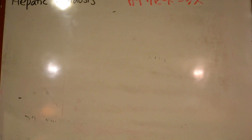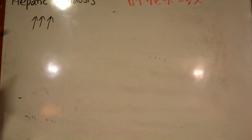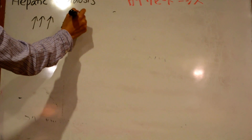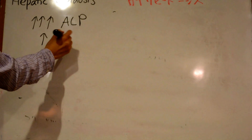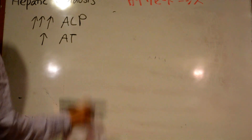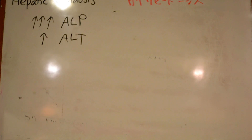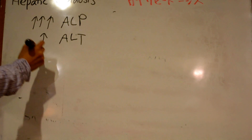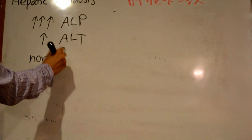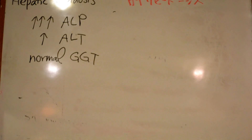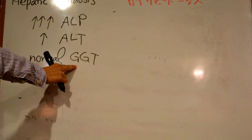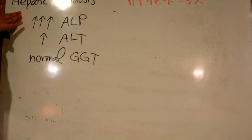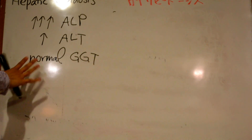The serum chemistry will often reveal a substantial increase in alkaline phosphatase, with a much less dramatic increase in alanine aminotransferase, and often a normal gamma-glutamyl transferase. This is important to remember because in other liver diseases you will see increased GGT and somewhat increased ALP, but in hepatic lipidosis you will see a dramatic increase in ALP and normal GGT.